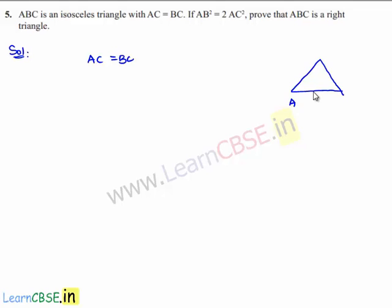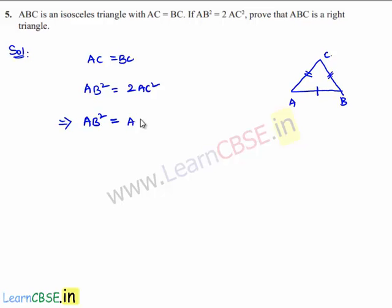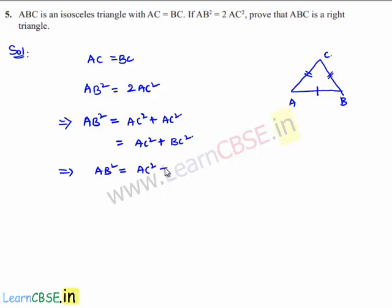It is given that ABC is an isosceles triangle with AC equal to BC. Let us draw triangle ABC. He has given that AB square is equal to 2AC square and AC is equal to BC. Writing down the condition: AB square equals 2AC square, which implies AB square equals AC square plus AC square, which equals AC square plus BC square, since AC is equal to BC.